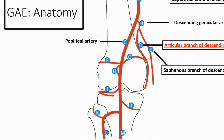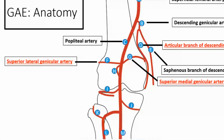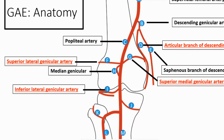Coming down the popliteal artery, we have basically the four workhorse arteries of the knee joint, specifically denoted by the geographic quadrant of the knee they supply. You have your superior lateral genicular artery and your superior medial genicular artery — these two have almost a butterfly or C-shaped appearance. You also have the median genicular artery, which comes off more proximally and is an artery to technically avoid, as it goes to the cruciate ligaments. Then you have the inferior lateral genicular, which has a characteristic horizontal shape, and the inferior medial genicular, which has more of a 45-degree angle.